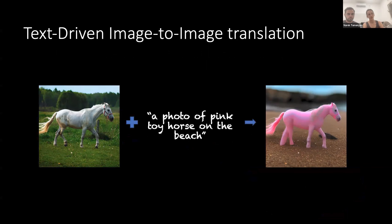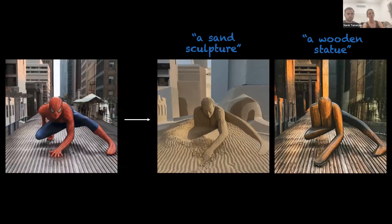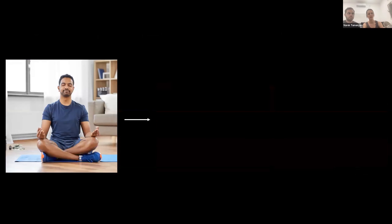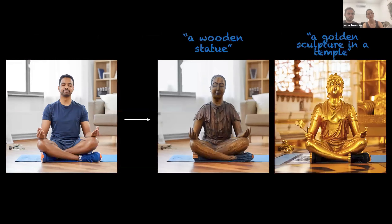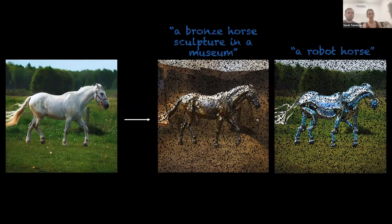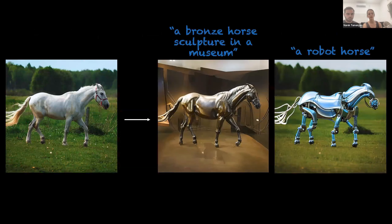Just like we see here with this pink toy horse, here are some more cool example results of our method, where we do have accurate structure preservation of the original source image while completely changing it according to the target text.